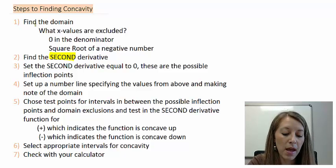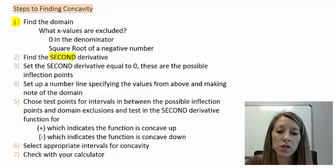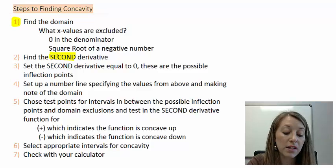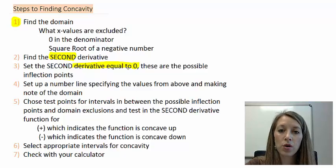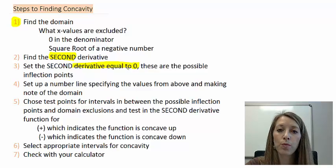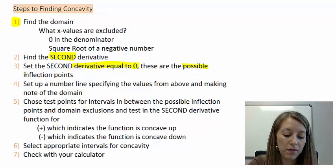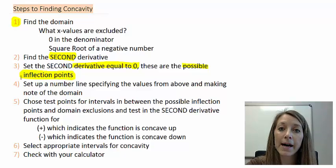First, we find the domain — meaning what values are excluded — because that's going to affect the number line we'll have to do eventually. Then we find the second derivative and set it equal to zero. When we did this with increasing and decreasing, we called those critical values, which became our extrema — max, min, or neither. Here, these are the possible inflection points. Not guaranteed inflection points, but possible points where it switches between concavity.